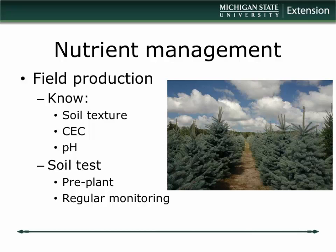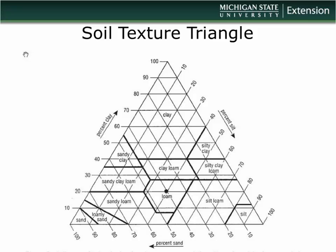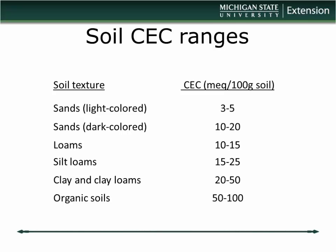Soil testing should be a regular part of your program. Pre-plant is important because adjusting pH is easiest then — liming or adding phosphorus is best done pre-plant. Then develop a program where you're regularly monitoring so you can adjust on the fly. Be aware of your CEC — in Michigan we have soils with very low CEC of 3–5, especially near the lakeshore, where there's not much there to hold nutrients. In those situations you're almost in a soilless-type culture.